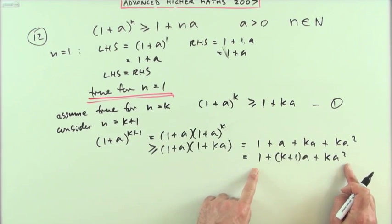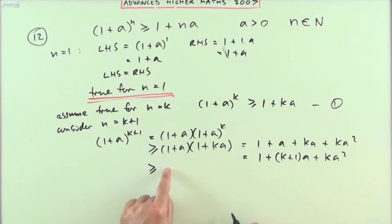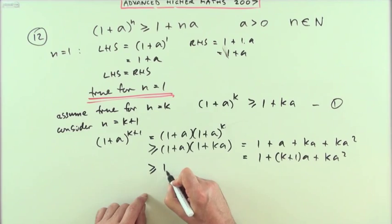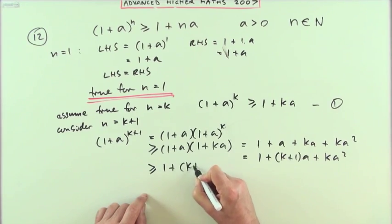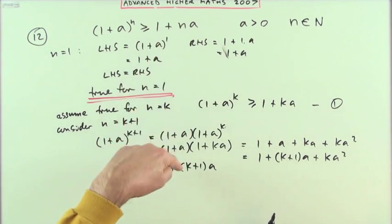Now I can put this part down, so this will now be greater than or equal to this part. That's greater than or equal to 1 plus just (k+1)a. And of course that was the required result. I could have put that down earlier. I'm looking for this to be the same as this with n replaced by k+1, and I've got it.